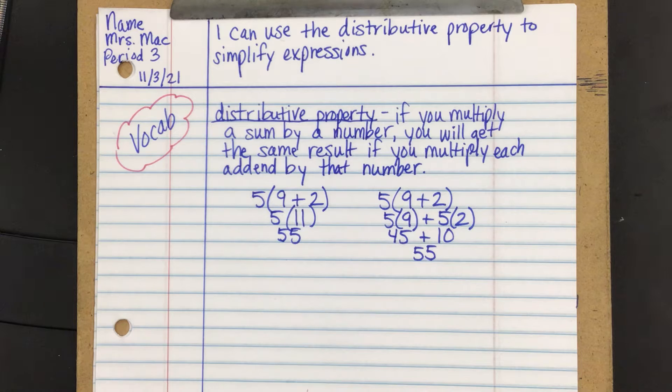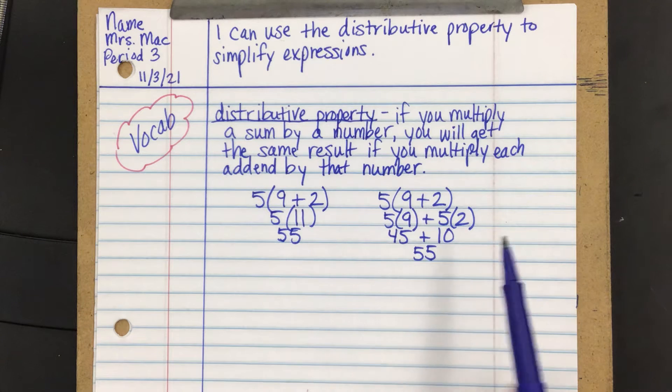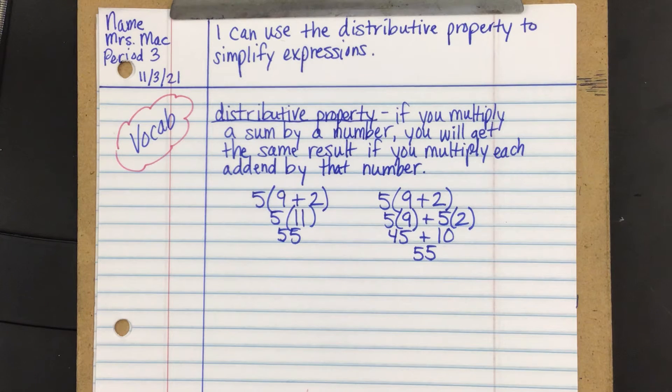So the definition hopefully makes more sense now because if you multiply each of the addends and then you simplify it, you're getting the same result as if you were to use the order of operations. Now, the reason this is important, if it's a numerical expression, obviously just go with the order of operations. It's so much easier than distributing. But we're not dealing with numerical expressions anymore. We're dealing with algebraic expressions, and we don't always know what the variable is. So let me show you an example of that.